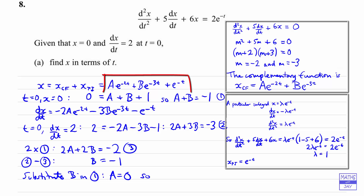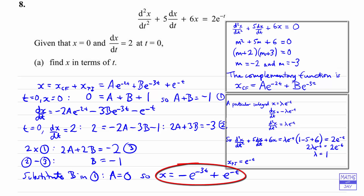So that gives us our x. Since a = 0, the term a·e^(−2t) disappears. Since b = −1, we've got minus e^(−3t), and then we already had the plus e^(−t). So the solution is x = −e^(−3t) + e^(−t). You might like to check that by differentiating and verifying that when t = 0, x = 0 and dx/dt = 2.